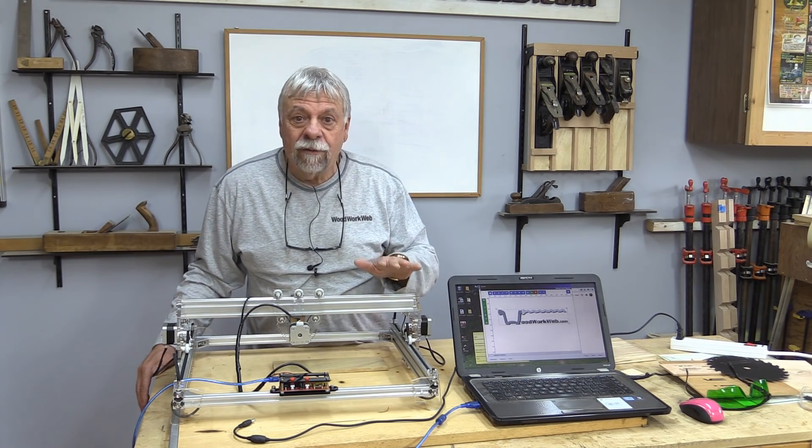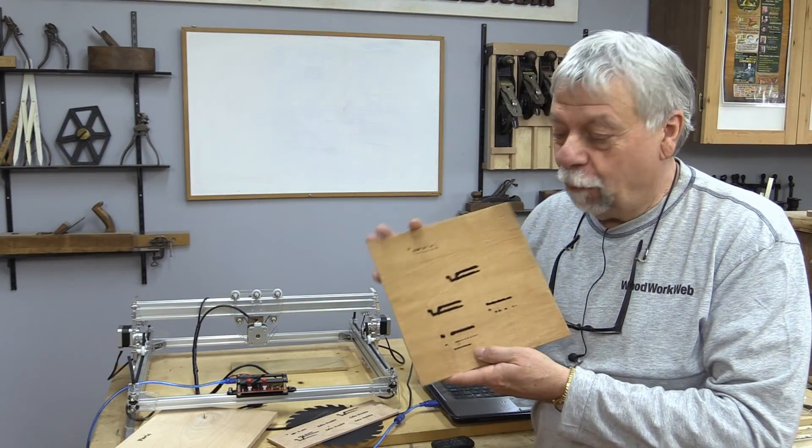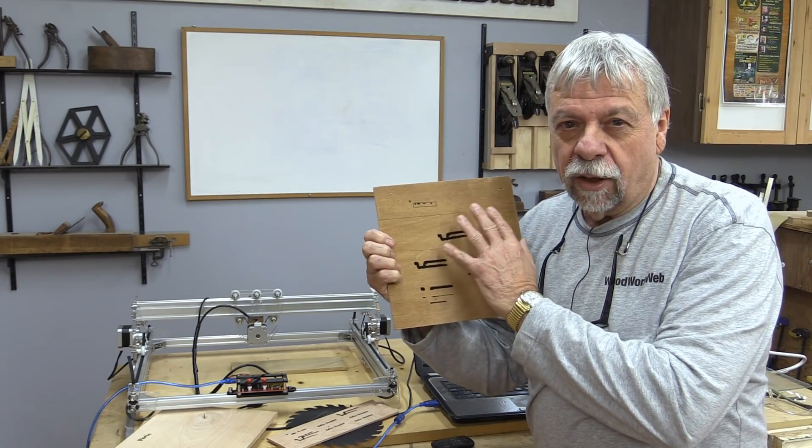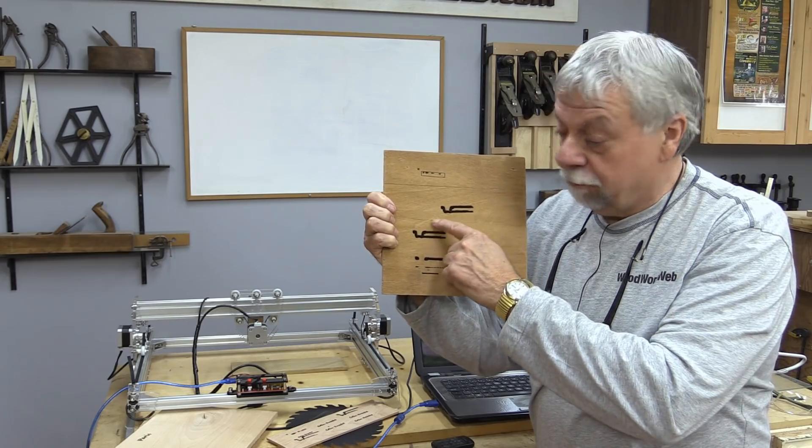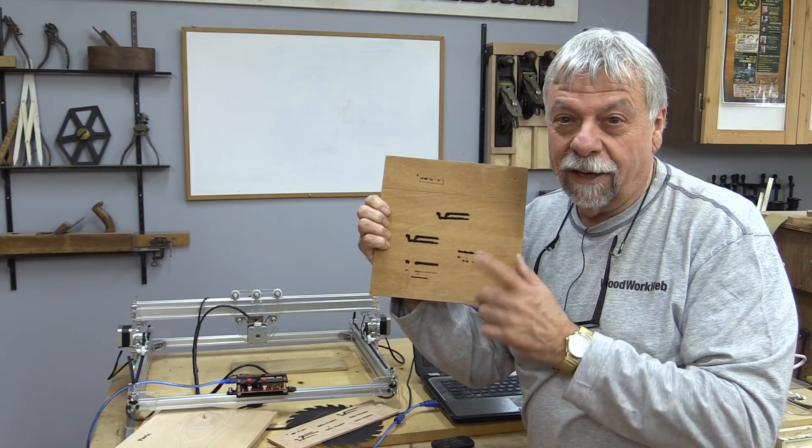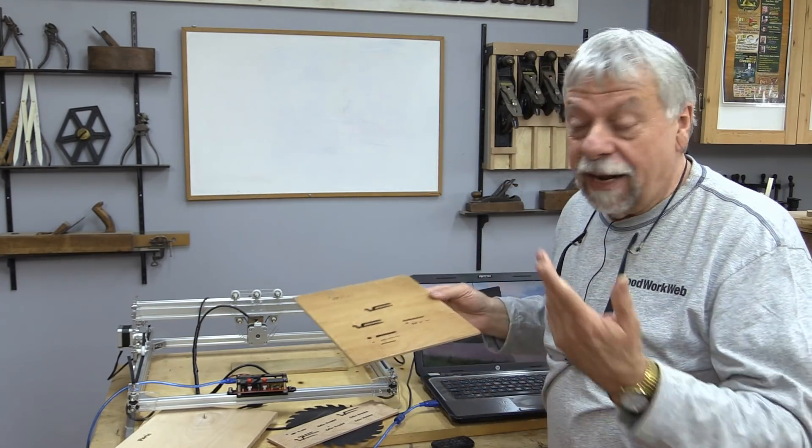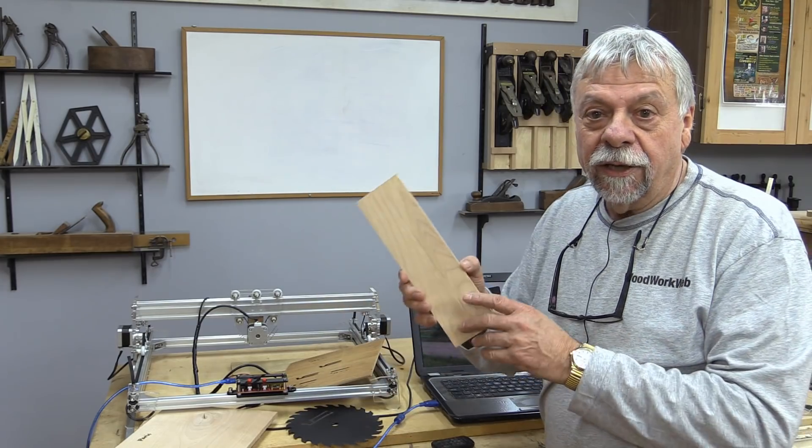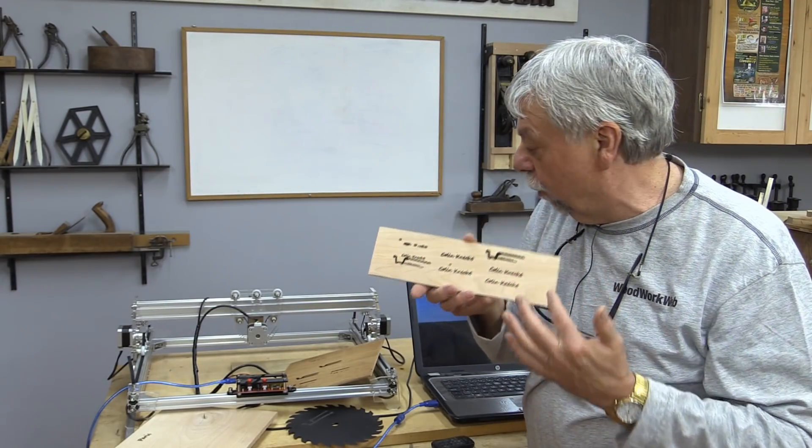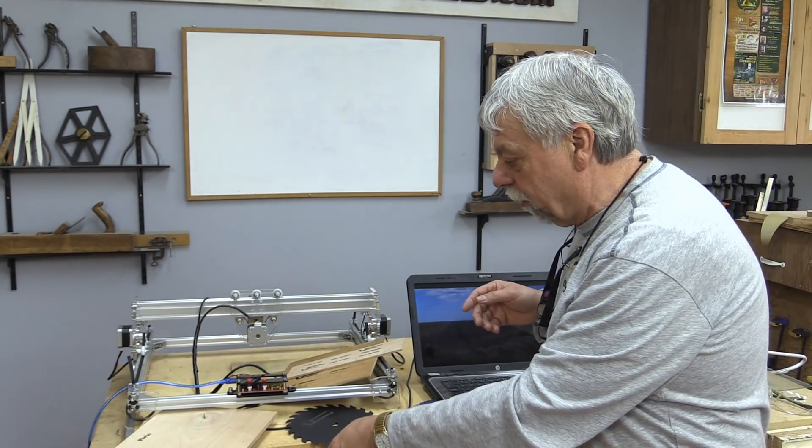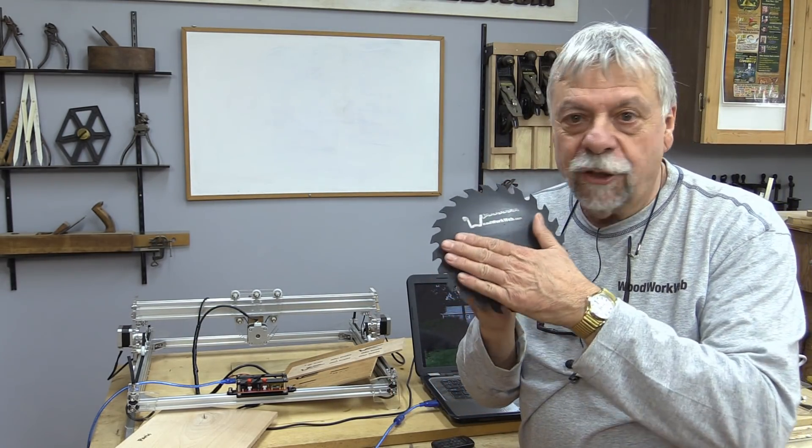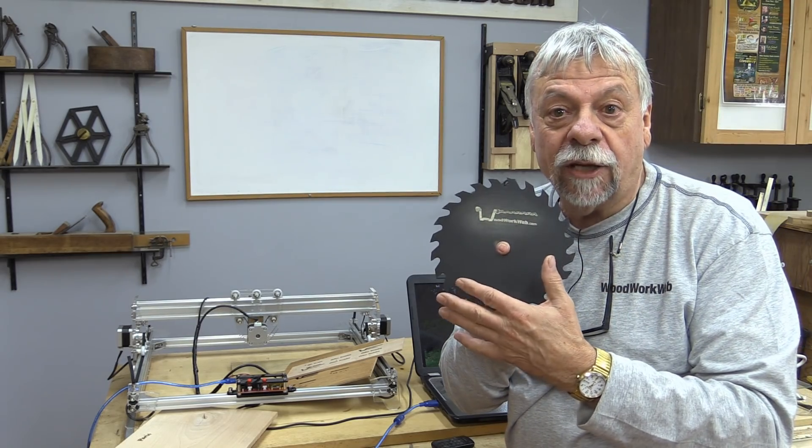Let me show you what some of the results are like that I got started with. When I first got the machine and got it set up and working, this is what I made - the Woodwork Web logo. You can see it just looks like some black lines. As I got learning the tool a bit more, I started working with some text and my own name, and you can see that I started to refine it. Then I got a little bit adventurous.